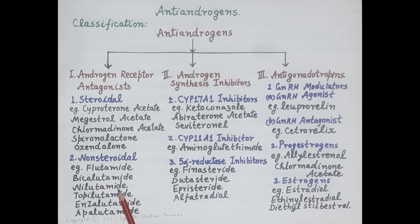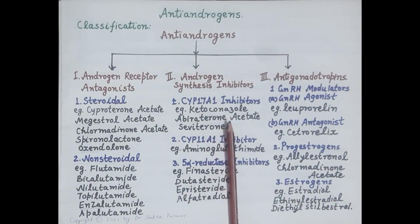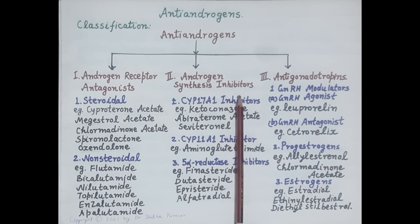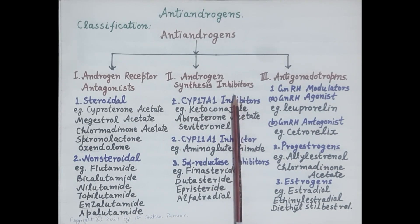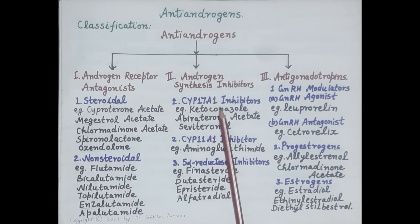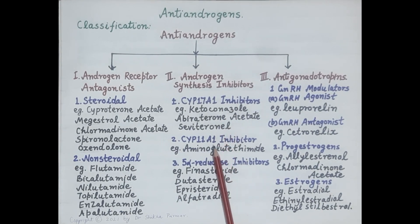Non-steroidal agents exhibit a better side effect profile. The second category of anti-androgens is androgen synthesis inhibitors. Androgens are steroids synthesized from cholesterol, so these agents inhibit enzymes required for steroid synthesis. The first type are CYP17A1 inhibitors — for example, ketoconazole and abiraterone acetate.